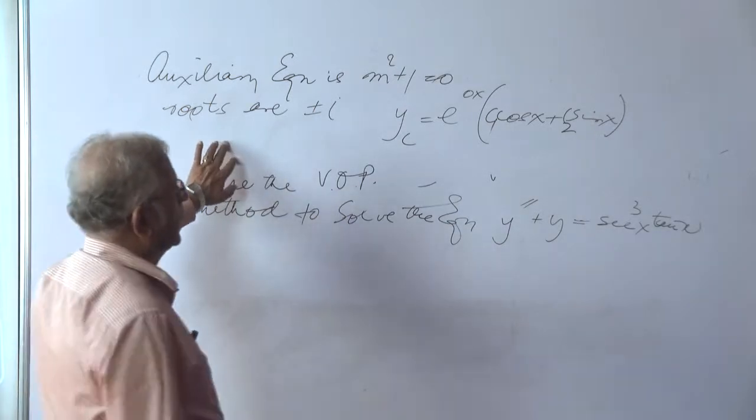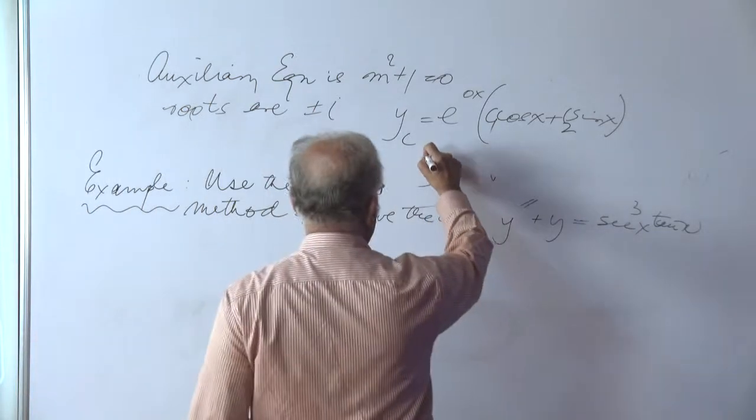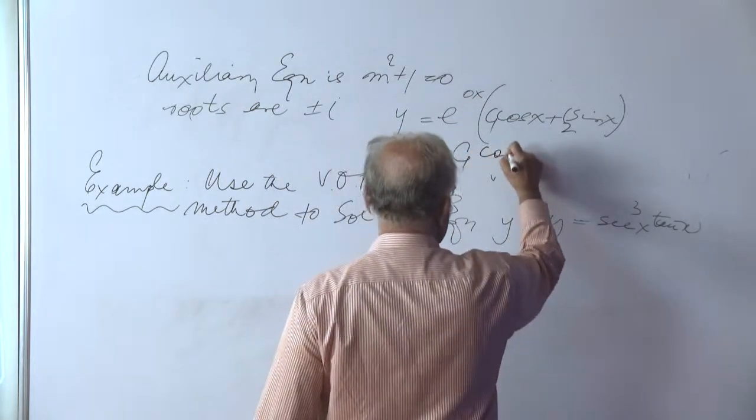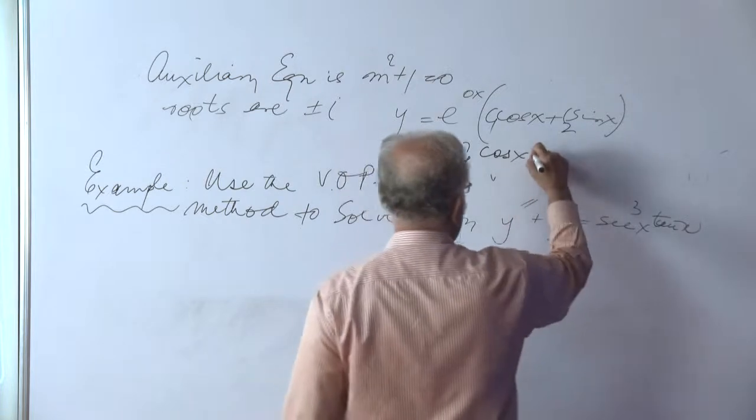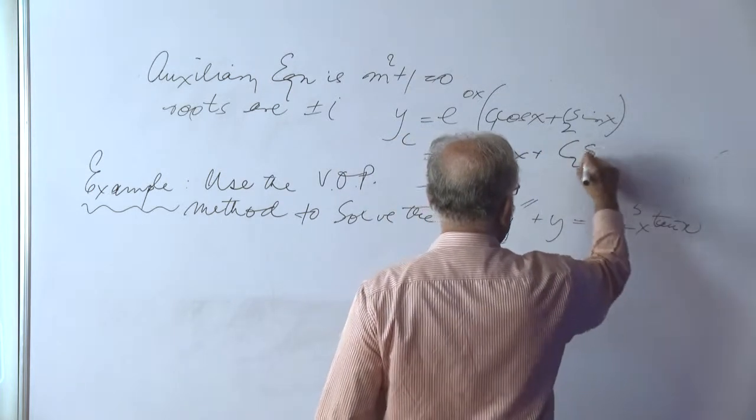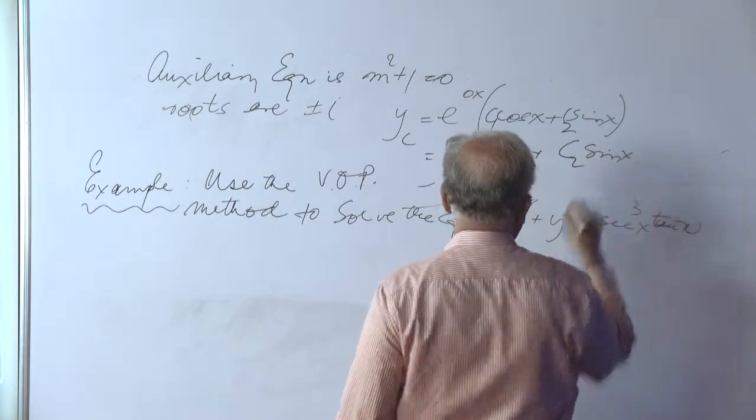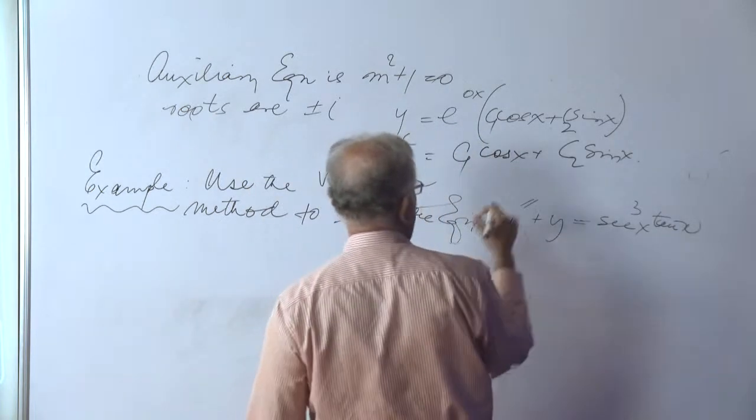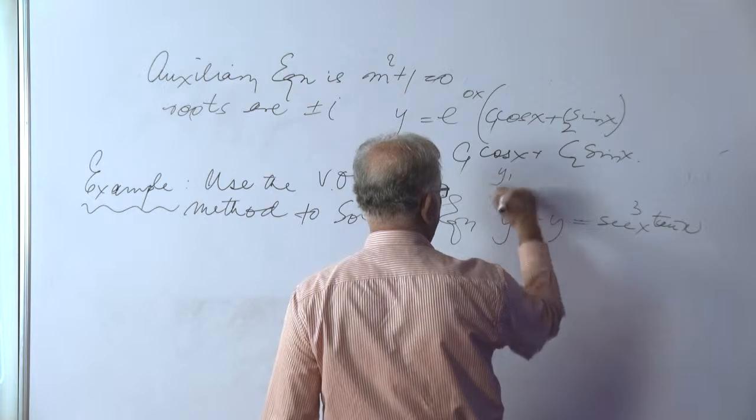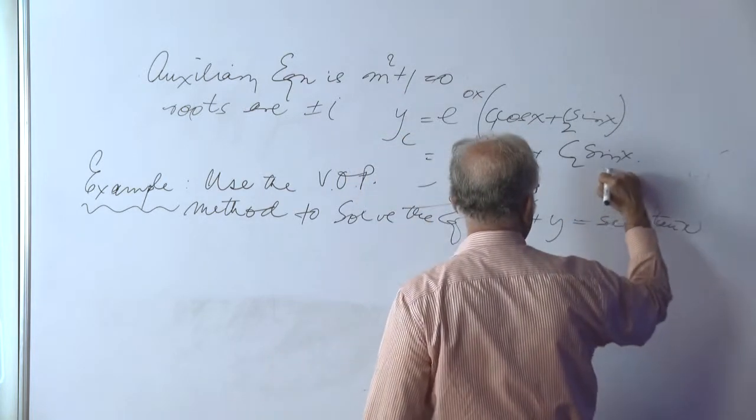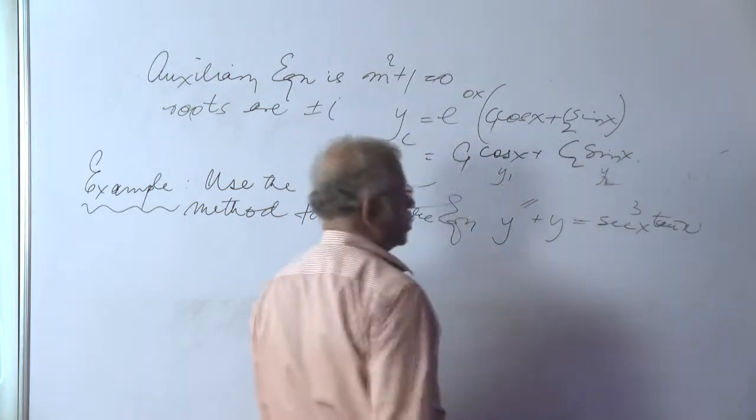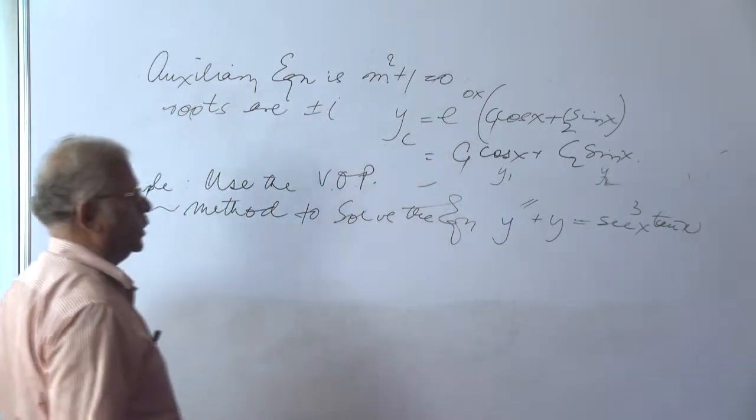This complementary function in other words, the complementary function is nothing but e to the power of 0x into cos x plus c2 sin x. We will just regard this as being y sub 1 and this as being y sub 2, where each is a solution of the original equation.